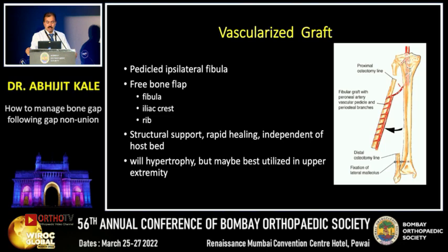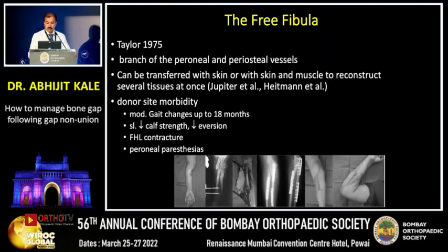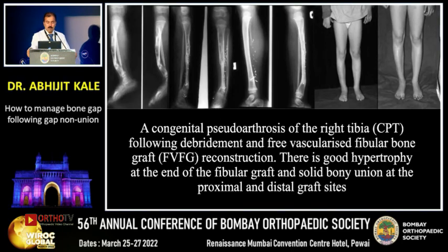The most common vascularized graft used is the fibula, which provides strong structural support and brings about very rapid healing. The free fibula graft was described in 1975, where the peroneal vessel pedicle is taken along with it. It can be used in an adjacent bone like the tibia or transferred to the thigh or forearm bones.